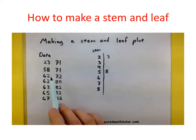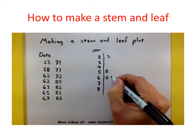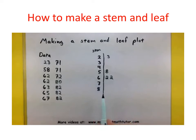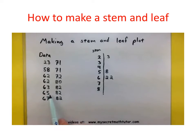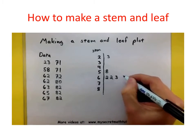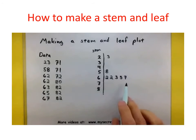Now we get into the 60s, and we've got lots of them. In fact, I have two 62s, so I'm going to put a 2 and then another 2. The way I read this is: here's one 62 and here's another 62. It looks like I also have a 63, a 65, and a 67 — so 3, 5, and 7. All of these are my 60s.